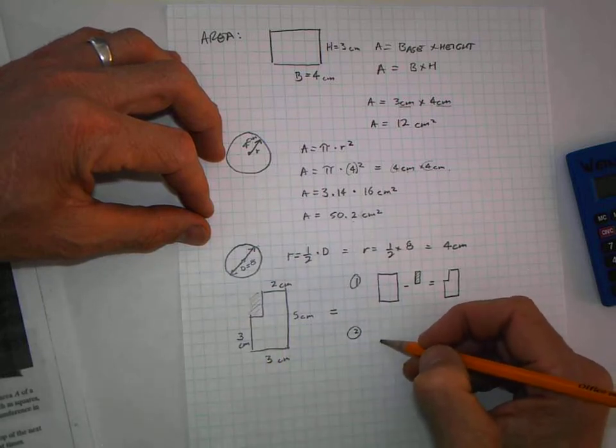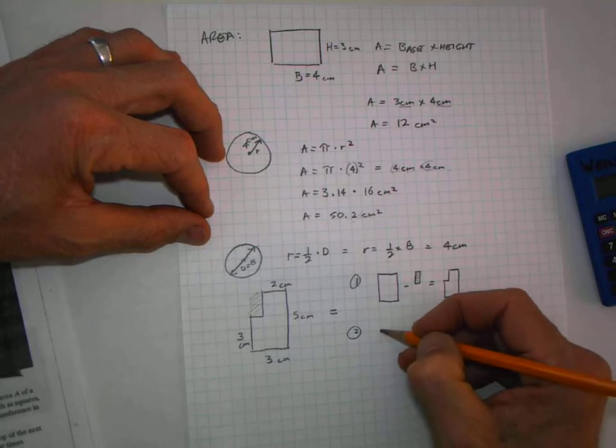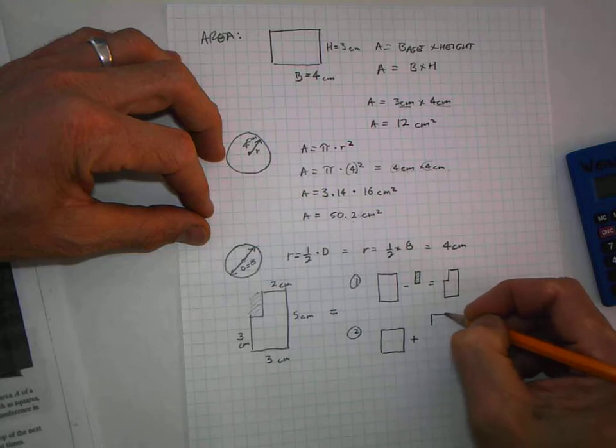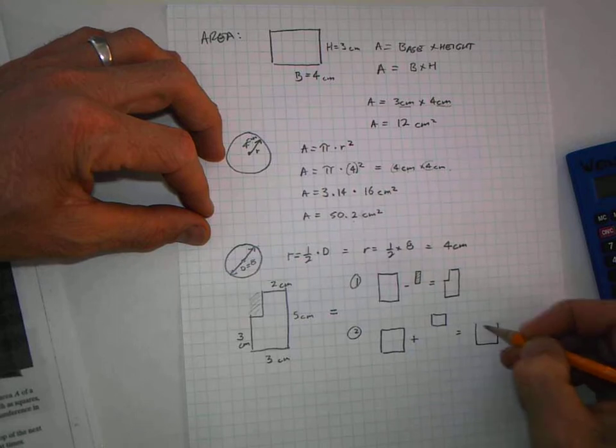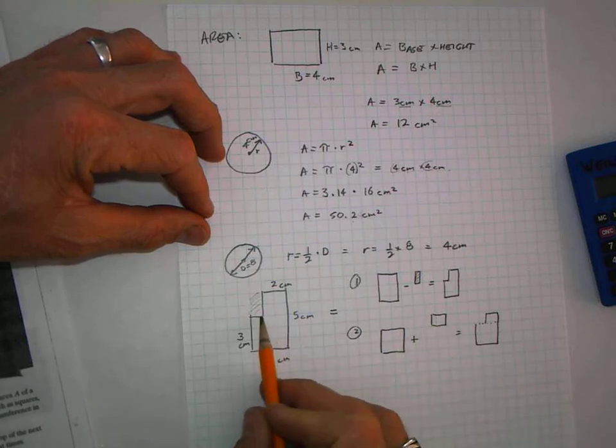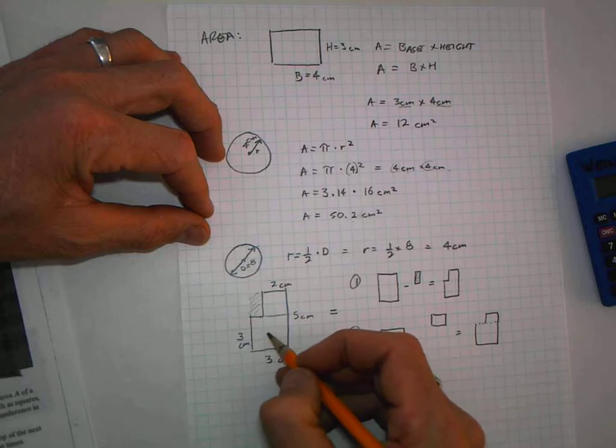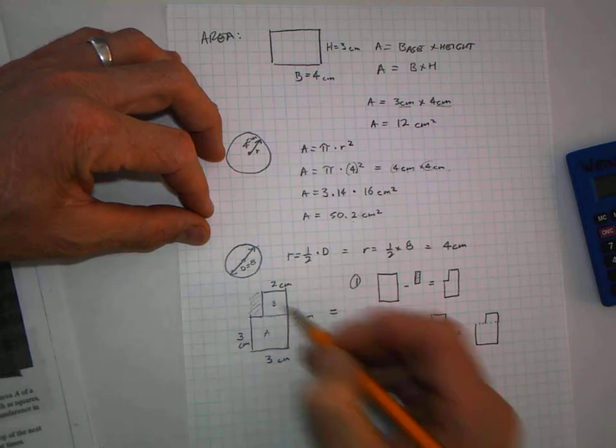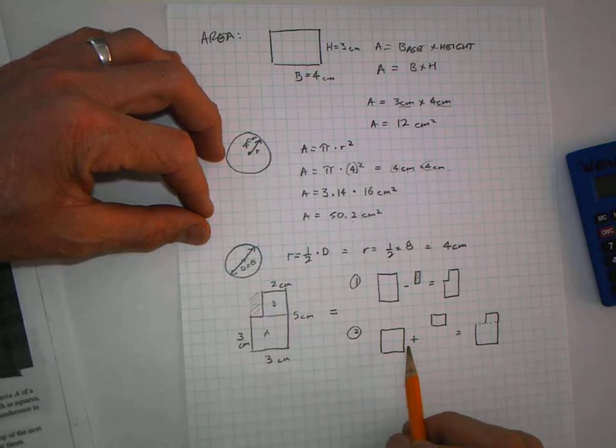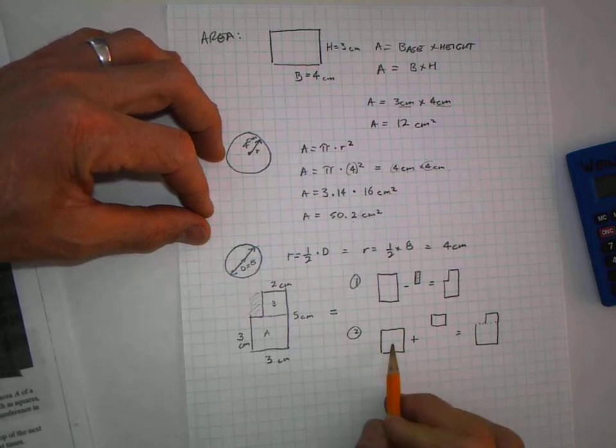The second way is to break it into small pieces. You take this piece, add another piece, and you get the shape. I'm going to call this piece A and this piece B. Then I'll find the area of each and add them together. Let's do Method 2.